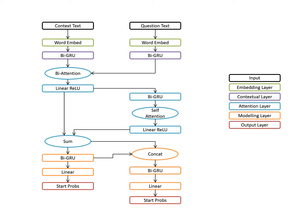This chart shows a diagram representation of the complete architecture, starting from the context and question text at the beginning, then going through the word embeddings which pass through a linked bi-GRU. Then we have the bi-attention layer, which feeds through a self-attention layer and then is summed with the output. Finally, the modeling layer is again two bi-GRUs.